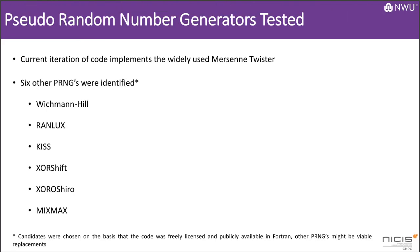The current version of the code uses the widely implemented Mersenne Twister pseudorandom number generator. But 6 candidate replacements were identified, namely Wichmann-Hill, RanLux, KISS, XORshift, Xoshiro, and MixMax. The candidate random number generators were chosen on the basis that the code was freely available and written in Fortran. Other algorithms might make excellent replacements. Also, care was taken to ensure that all of the algorithms can run in parallel and that the streams are independent from each other.